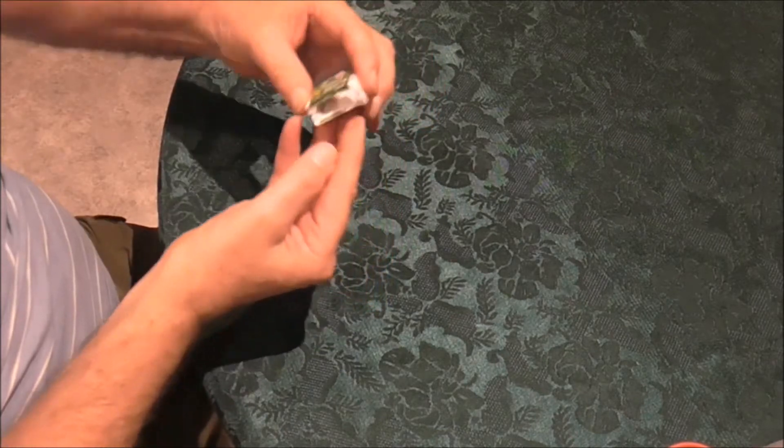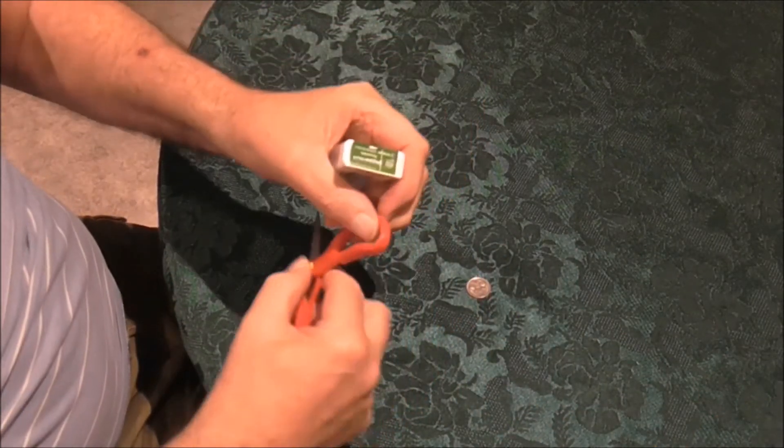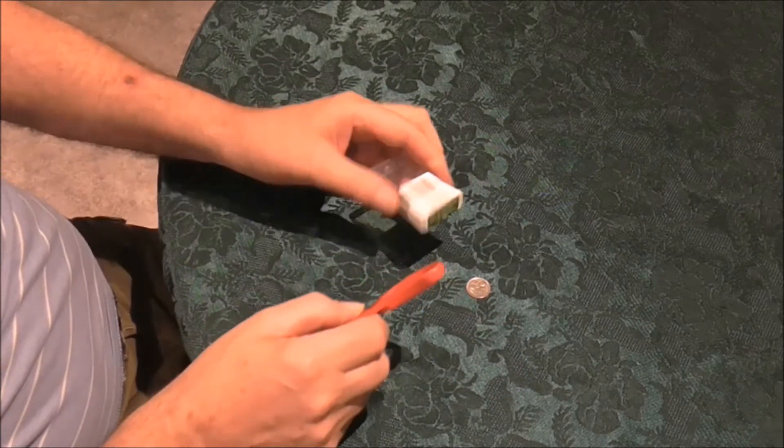You can take, I'll get that coin out first of all. You can take a pair of scissors, and just with one of the blades, slice through that seal at the top.